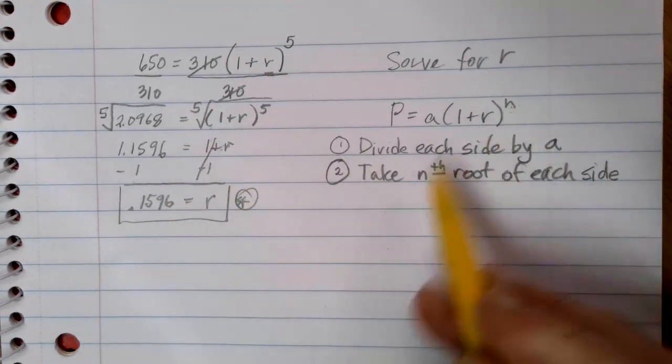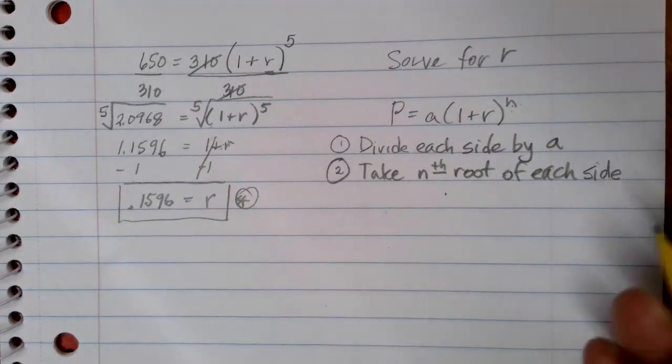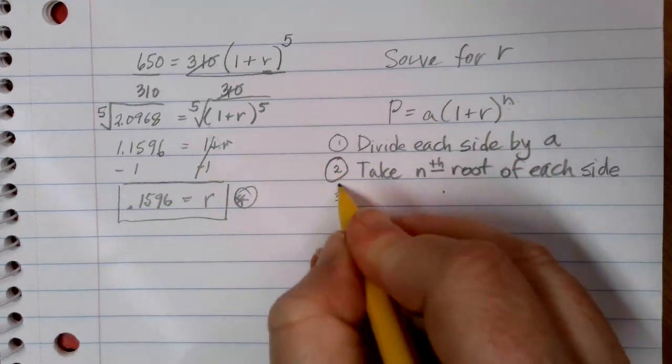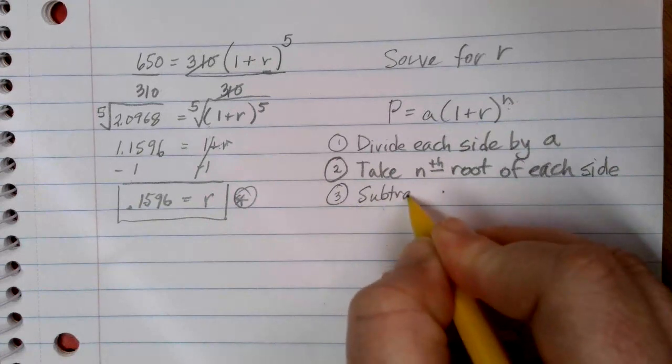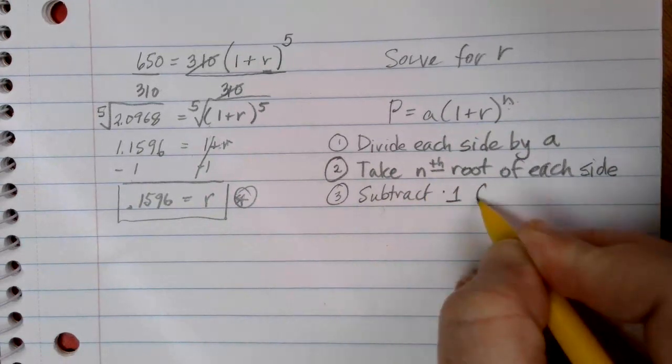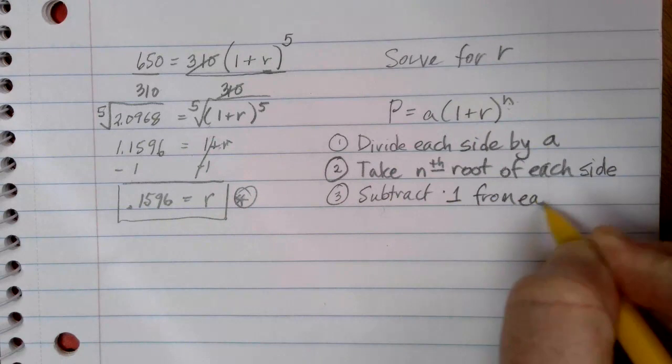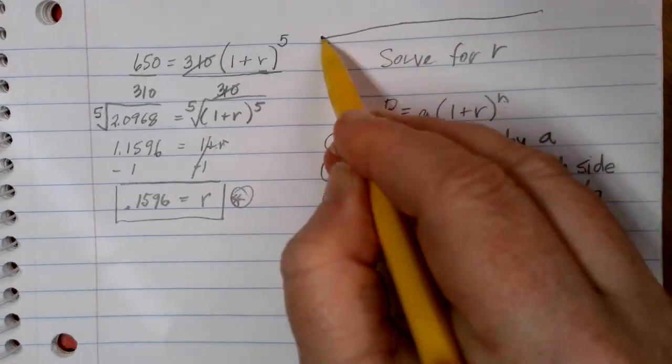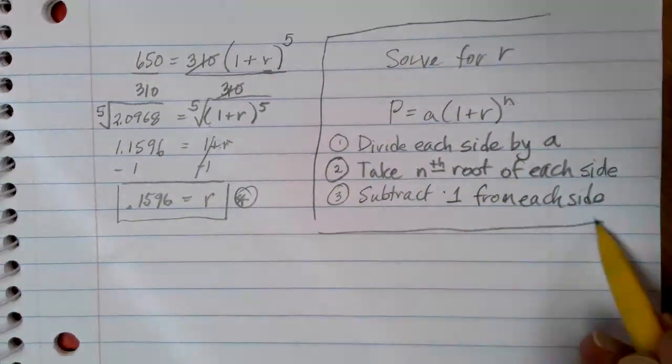Here our power is N, so we take the Nth root, whatever that's going to be. And then the last thing that you'll need to do to get the R by itself is to subtract 1 from each side.